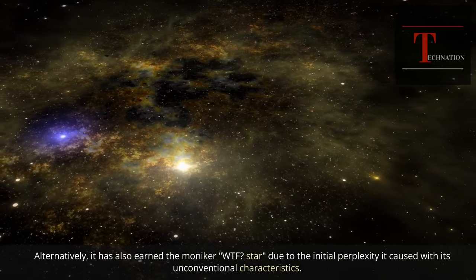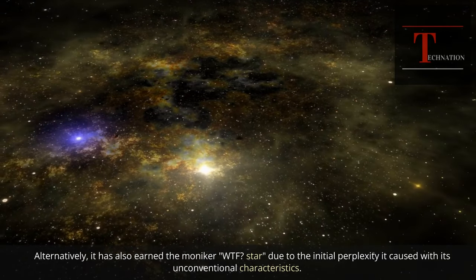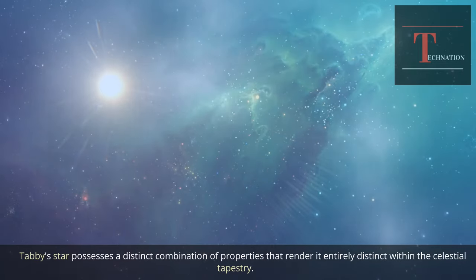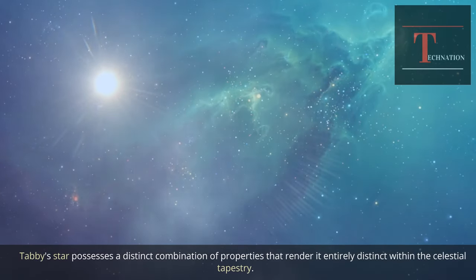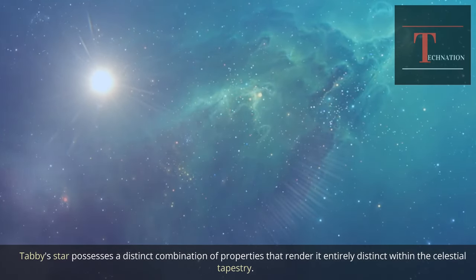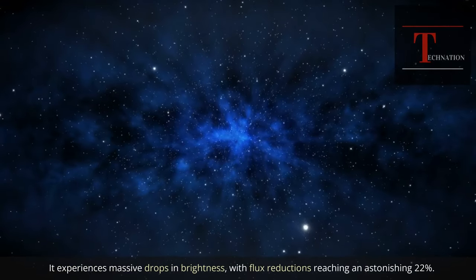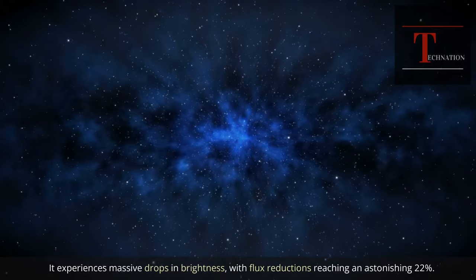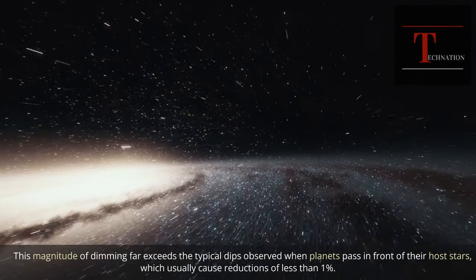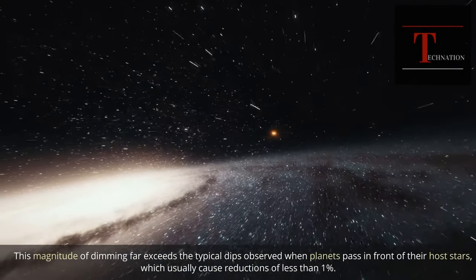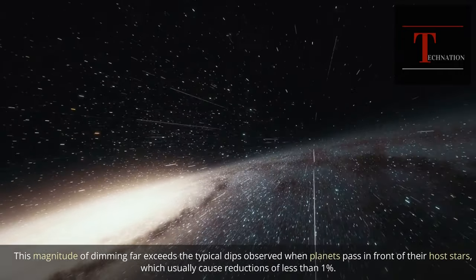Tabby's star possesses a distinct combination of properties that render it entirely distinct within the celestial tapestry. It experiences massive drops in brightness, with flux reductions reaching an astonishing 22%. This magnitude of dimming far exceeds the typical dips observed when planets pass in front of their host stars, which usually cause reductions of less than 1%.